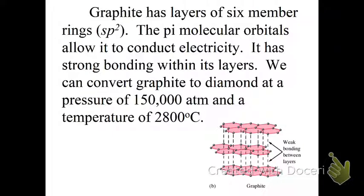Graphite is an sp² arrangement, and it has six-member rings, and they have pi-molecular orbitals that allow it to conduct electricity. It has strong bonding within its layers, and we can convert graphite to diamond at a pressure of about 150,000 atmosphere and a temperature of 2,800 degrees Celsius. The reason that graphite, the layers, the reason it's so soft and we use it as pencil lead, is because the layers basically slough off.